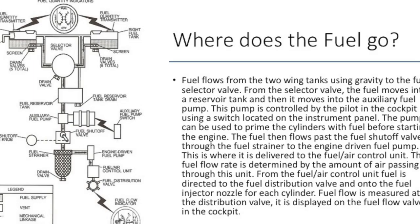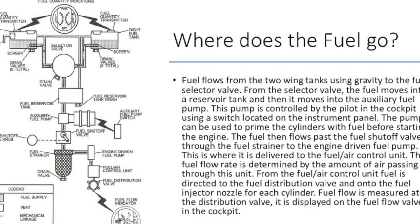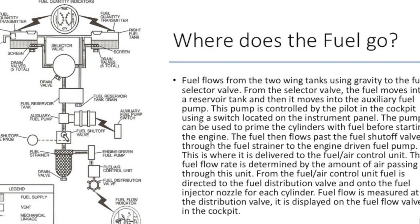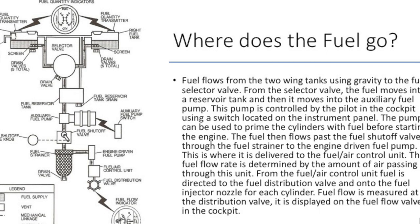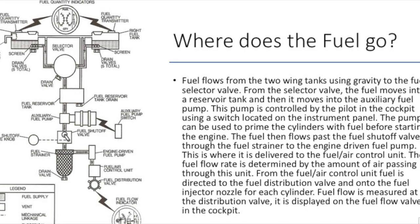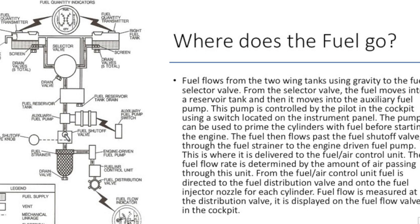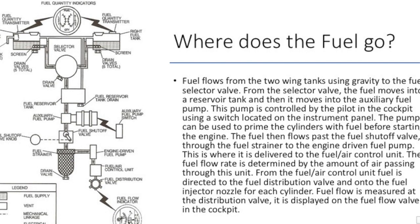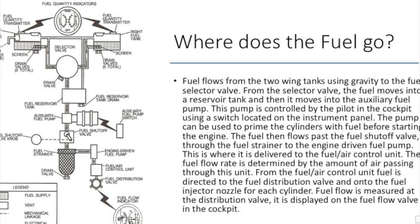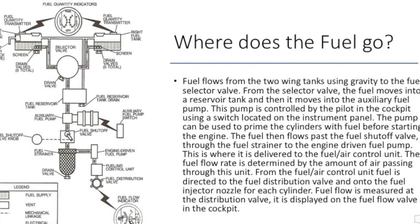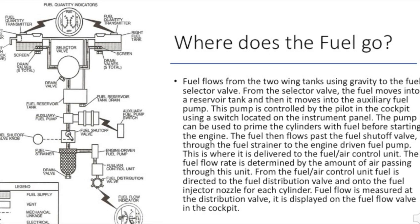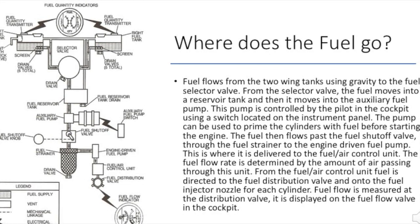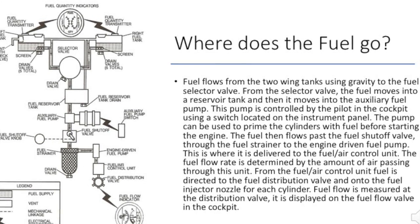Now I am going to discuss where the fuel goes. Fuel flows from the two wing tanks using gravity to the fuel selector valve. From the fuel selector valve, the fuel moves into a reservoir tank and then into the auxiliary fuel pump. This pump is controlled by the pilot in the cockpit using a switch located on the instrument panel. The pump can be used to prime the cylinders with fuel before starting the engine, which is one of the processes used during a pre-flight check.